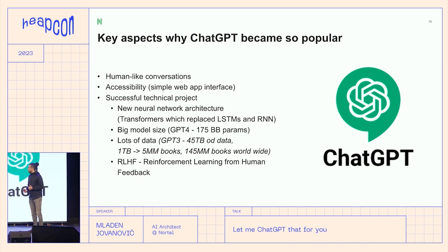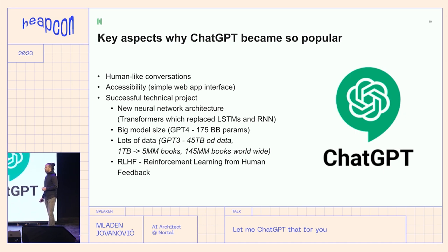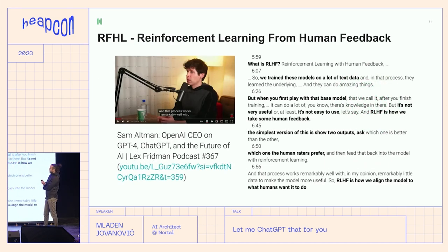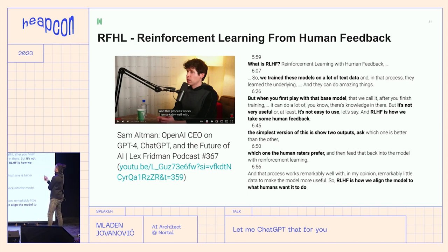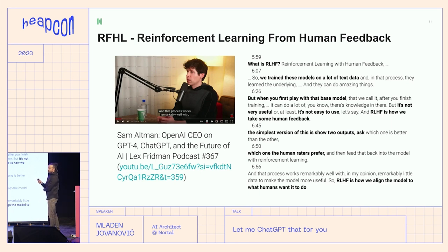One really important thing for the successful execution of this technical project is reinforcement learning from human feedback. Reinforcement learning is an area of machine learning — we could spend another hour just explaining that. The only feedback mechanism they used was a like or dislike button on the response. It's mind-blowing that it worked so well just from the feedback of users or the labelers they had.